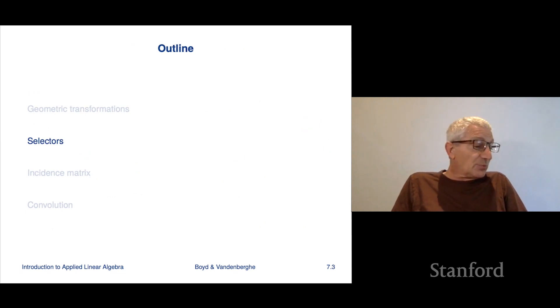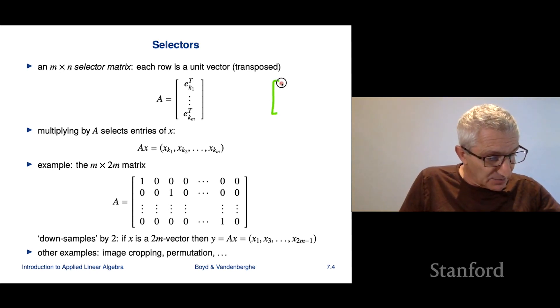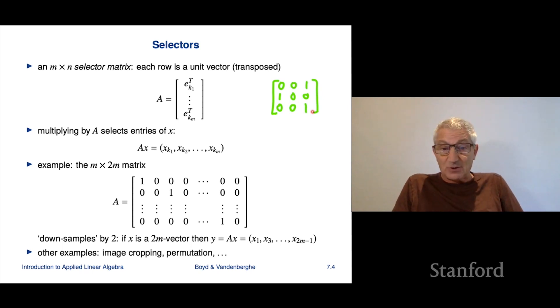The next big group of examples we're going to look at is pretty generic. It's called selectors. And I'll tell you what a selector is. So a matrix is a selector if each of its rows has exactly one one, and all other entries are zero. And another way to say that is that each row is a unit vector transposed. So here's a selector, I'll just make one for you like this. So there you go. So there's a three by three selector matrix.